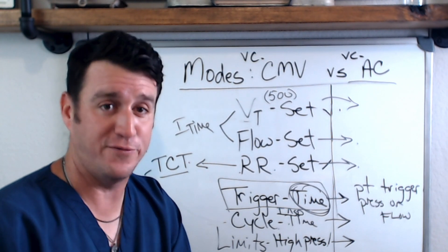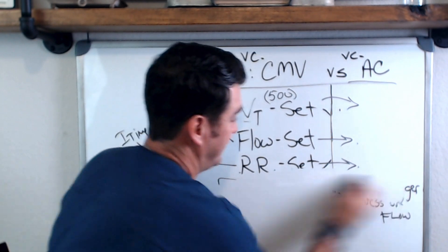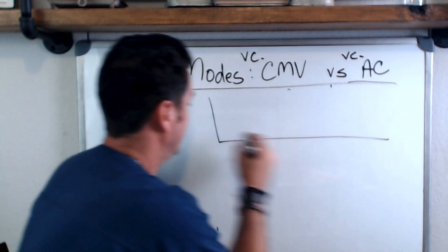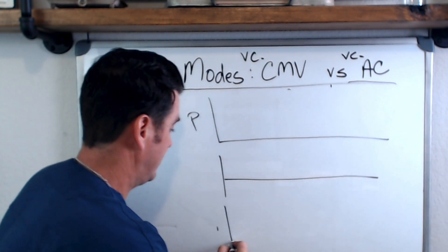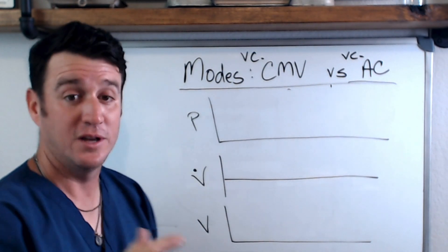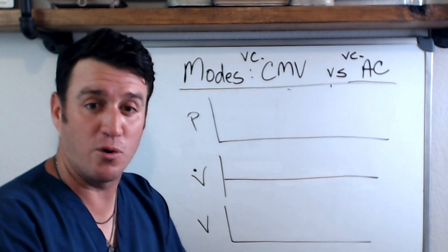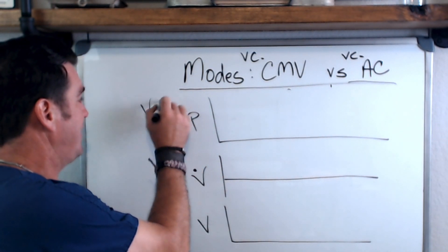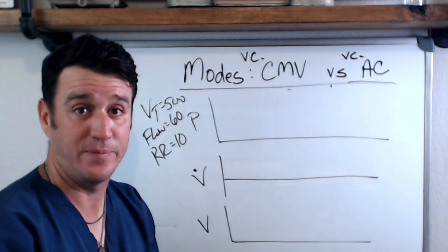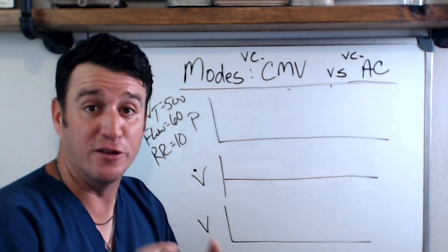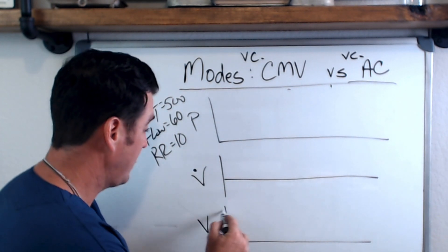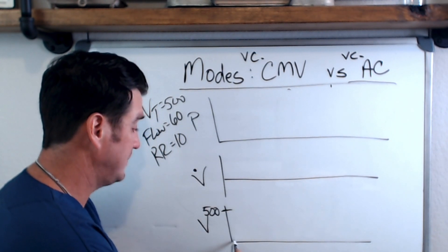Let's look at this in terms of waveforms — pressure, flow, and volume. With a tidal volume of 500, a flow of 60 liters per minute, and a rate of 10, those three settings are fixed. The vent will deliver exactly those values every breath without variation.